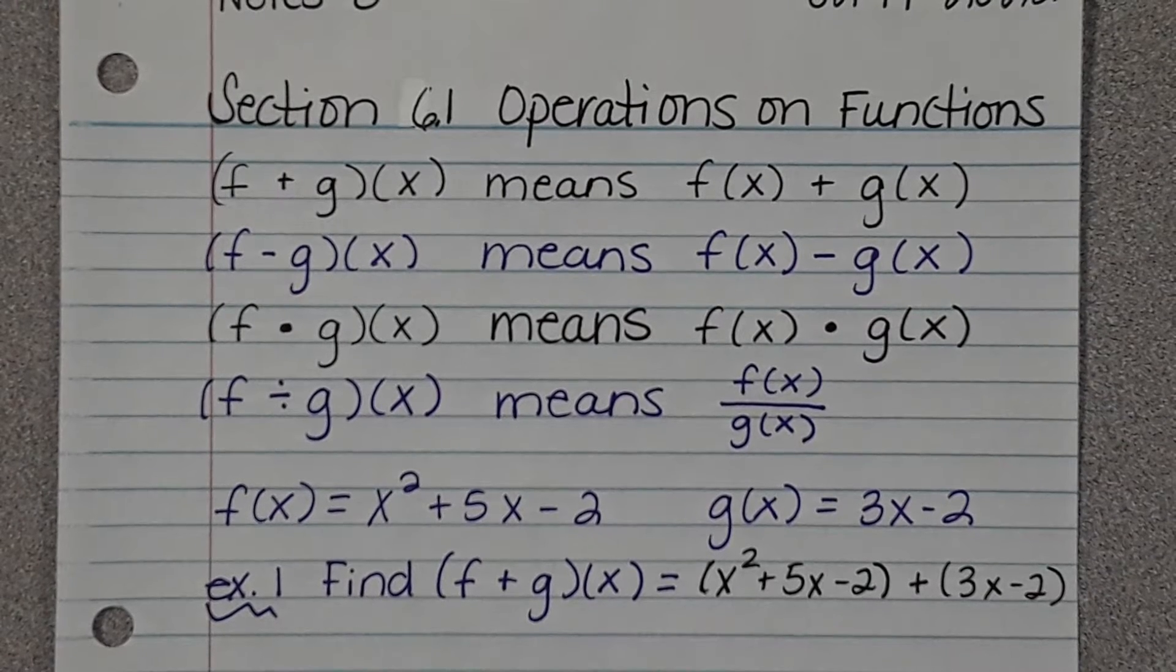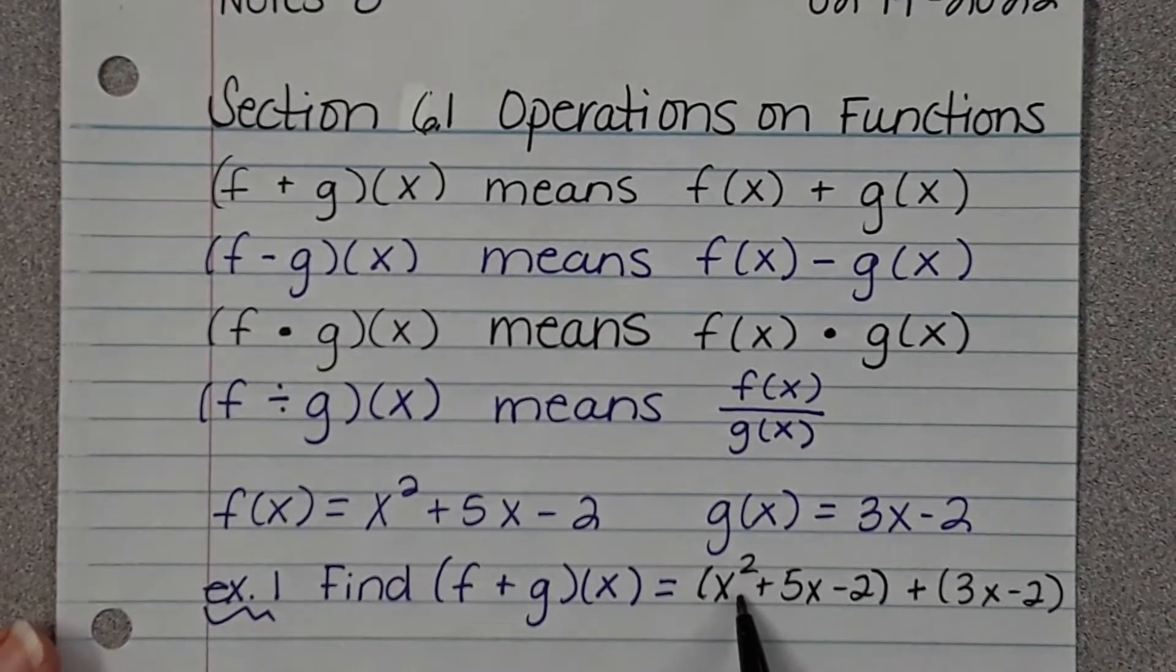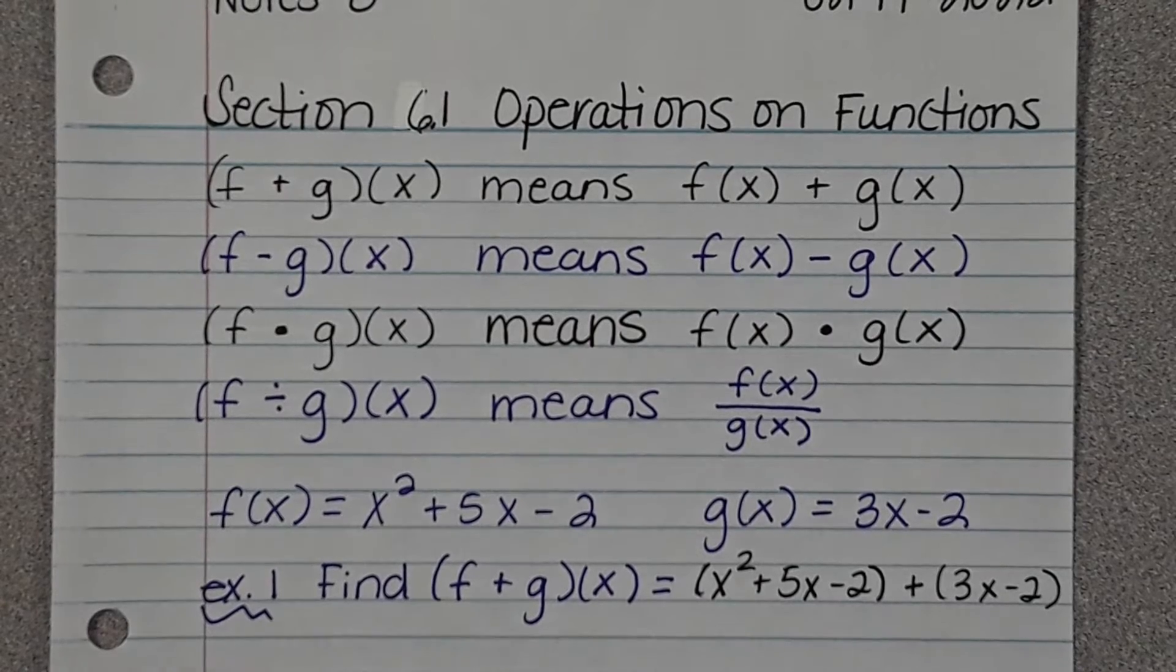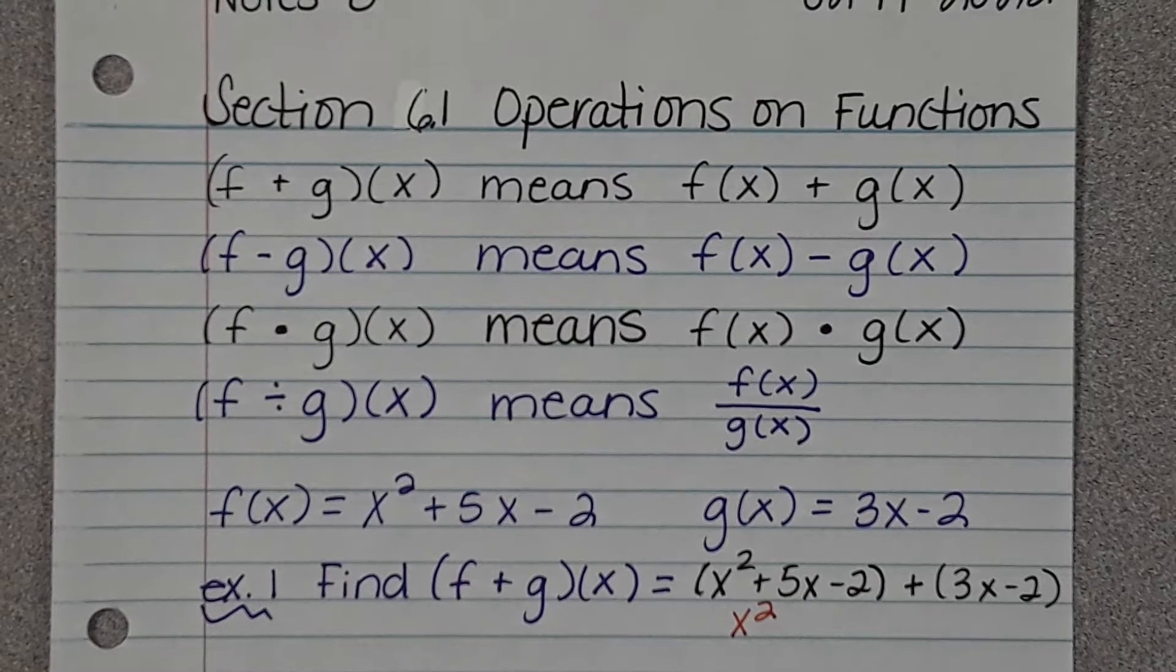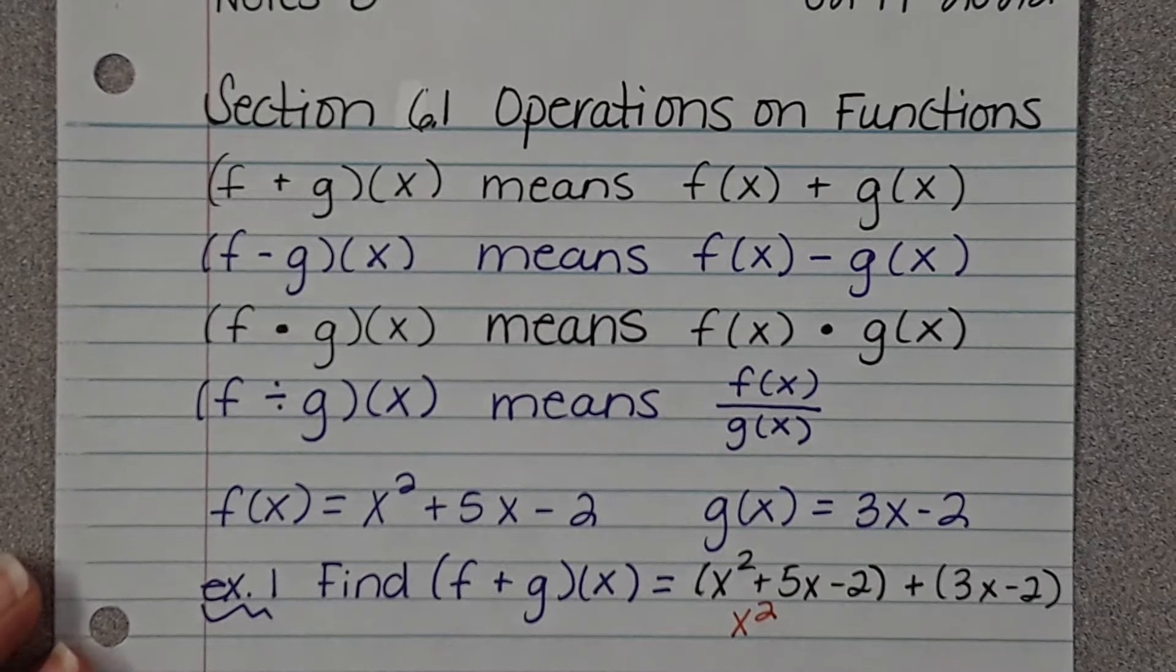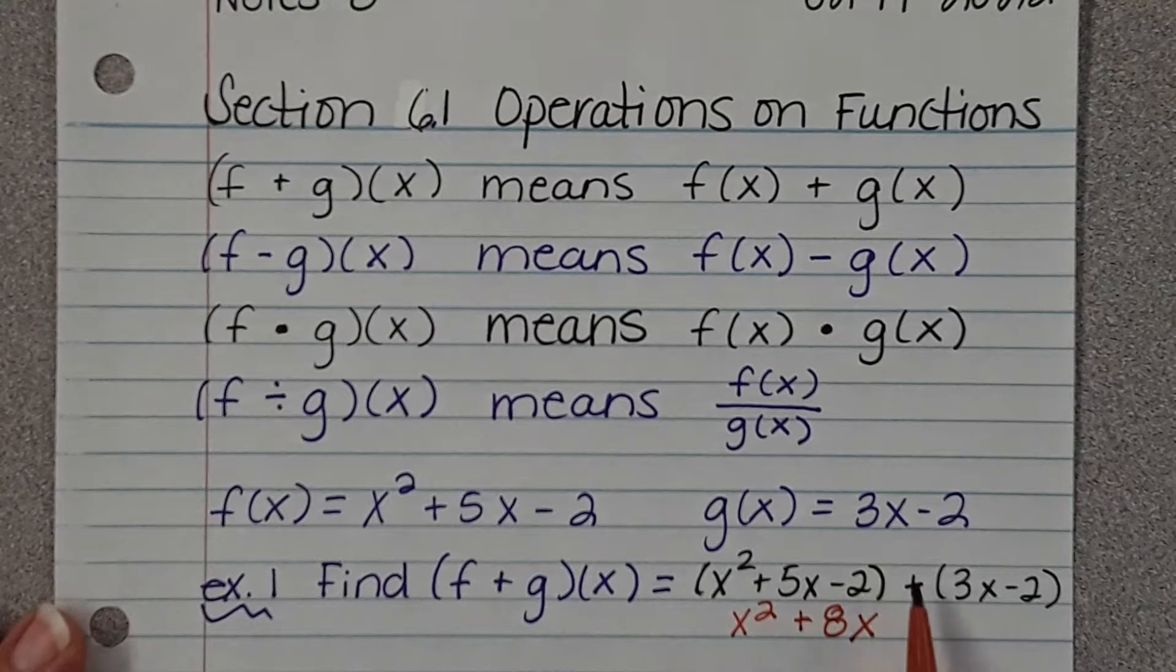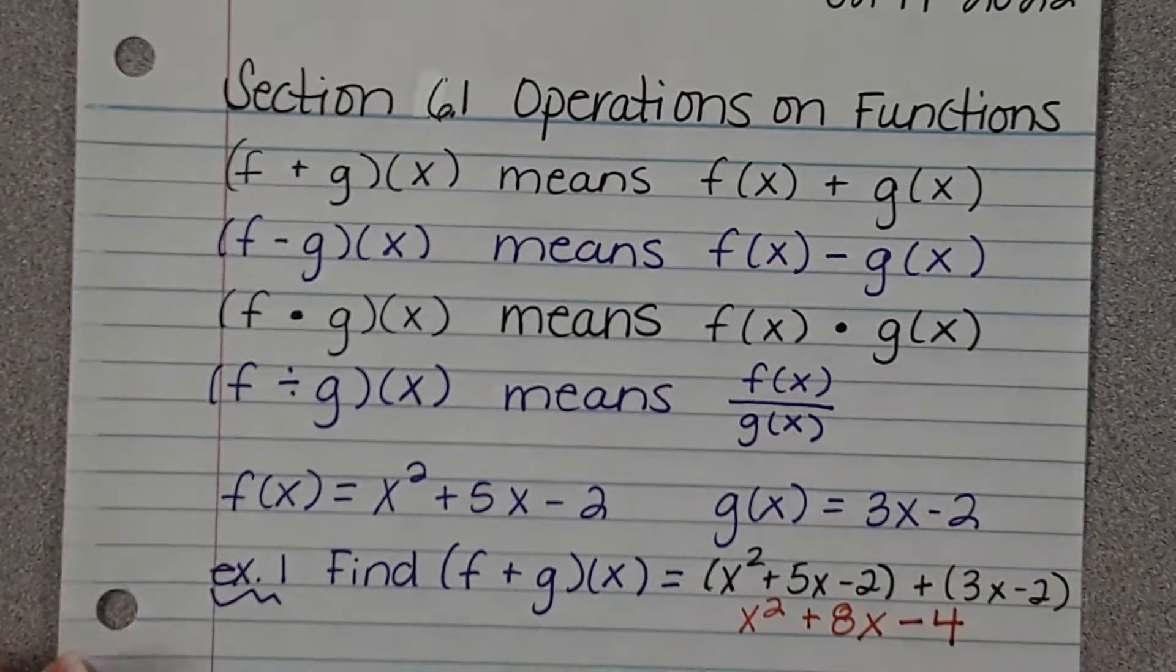So what we're going to do now is combine like terms. Is there an x² anywhere else in the problem? So x² stays alone. Is there something with just an x? So 5x plus 3x is 8x. Then negative 2 plus negative 2 is negative 4. That's our answer.